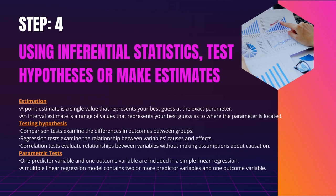Step 4: Using inferential statistics, test hypotheses or make estimates. A statistic is a number that describes a sample, whereas a parameter is a number that describes a population. Based on sample statistics, you can draw conclusions about population parameters using inferential statistics. To make statistical inferences, researchers frequently use two main methods simultaneously: 1. Estimation is the process of calculating population parameters using sample statistics. 2. Hypothesis testing is a formal process for using samples to test research predictions about the population.